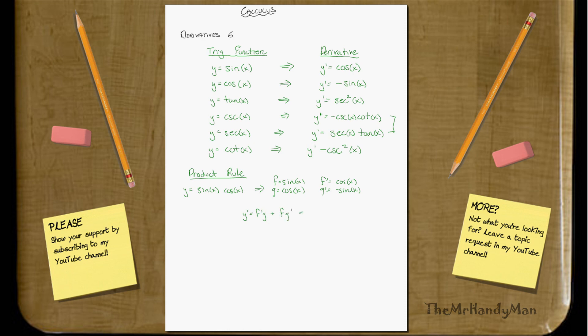So that equals cosine x times g, which is cosine x, plus sine of x times negative sine x.